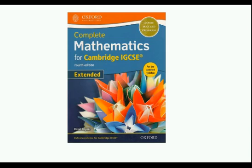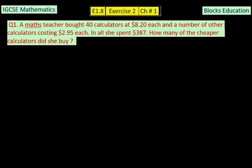We are using Complete Mathematics for Cambridge IGCSE extended syllabus written by David Rayner. In question number one, it says a math teacher bought 40 calculators at $8.20 each and a number of other calculators costing $2.95 each. In all she spent $387. How many of the cheaper calculators did she buy?